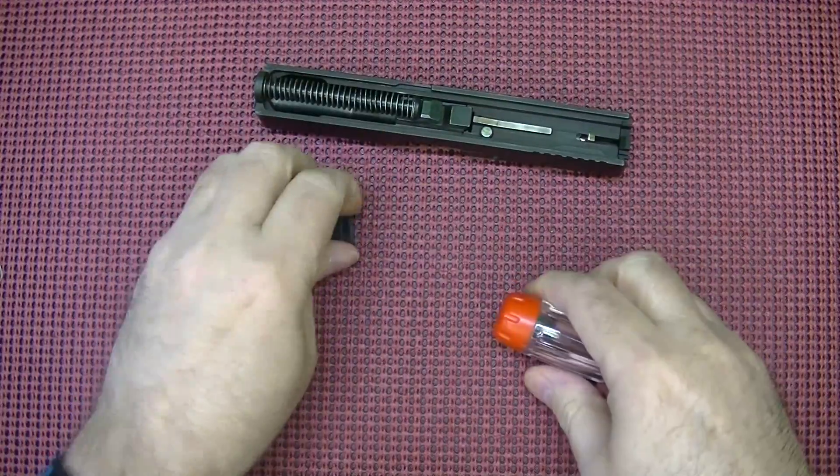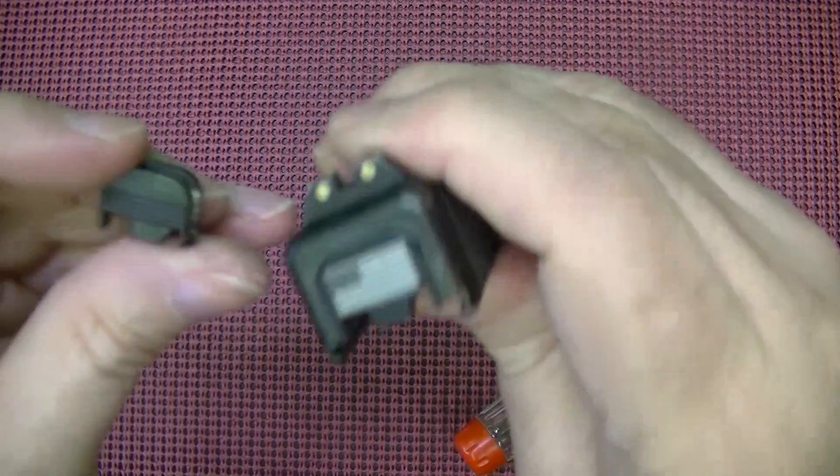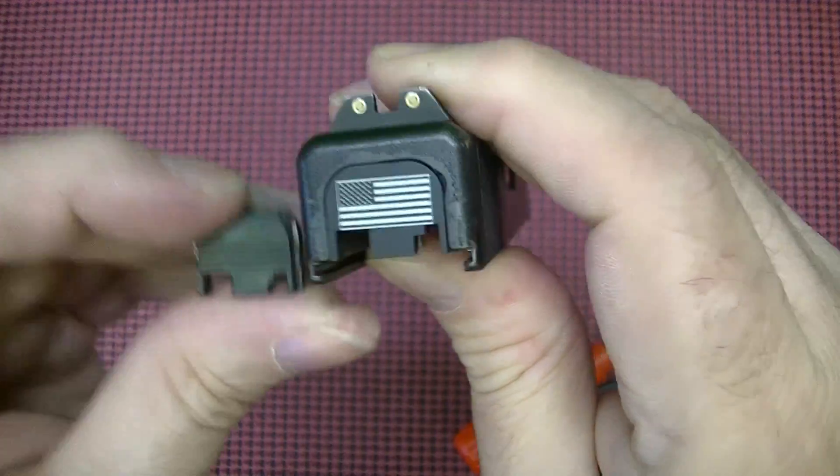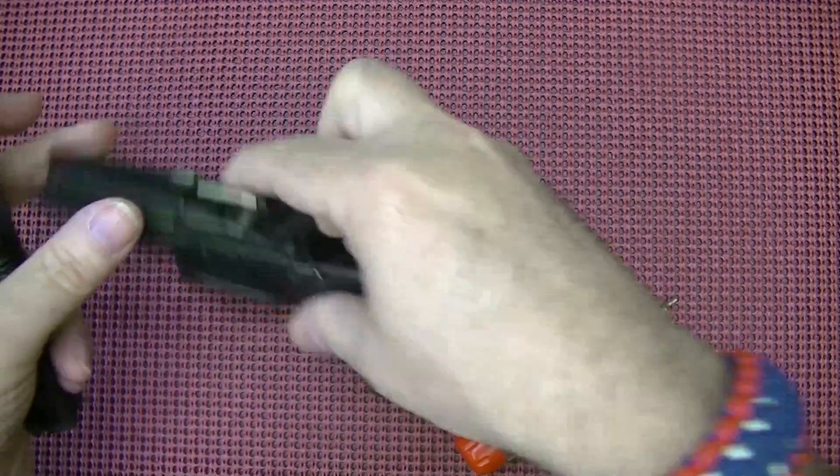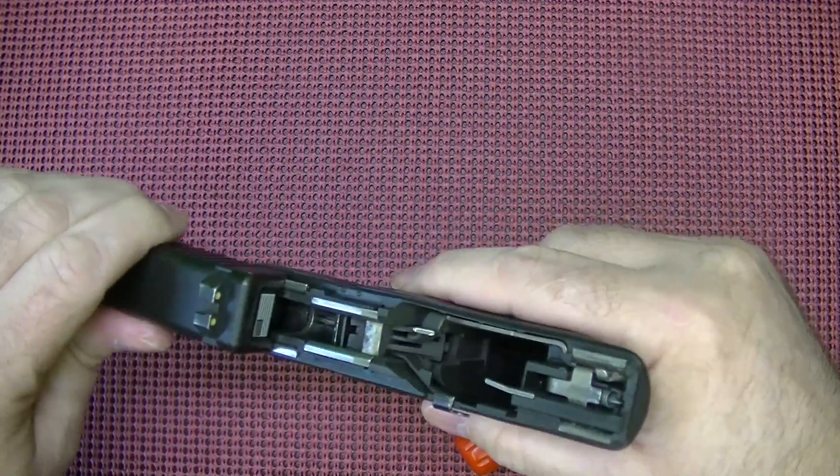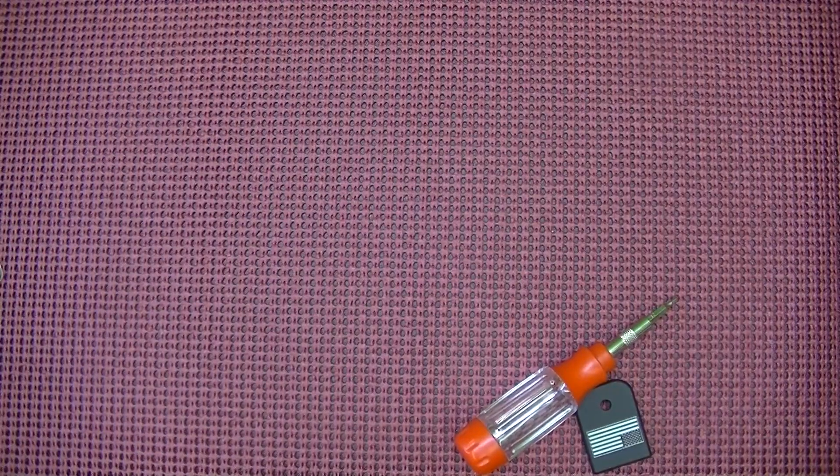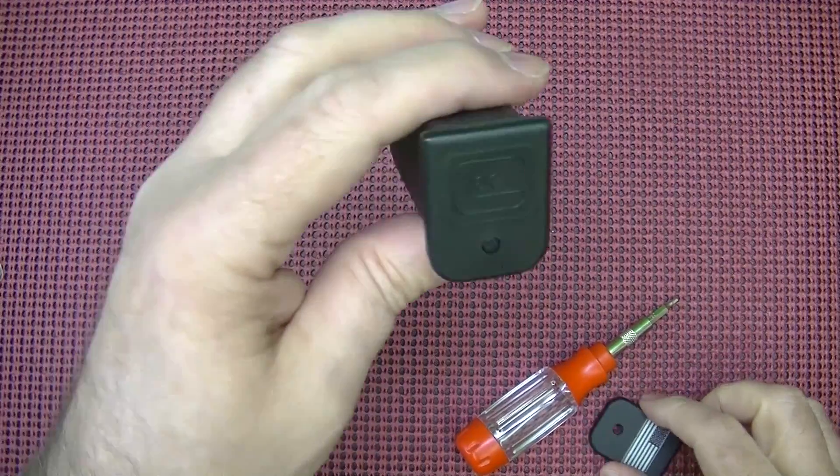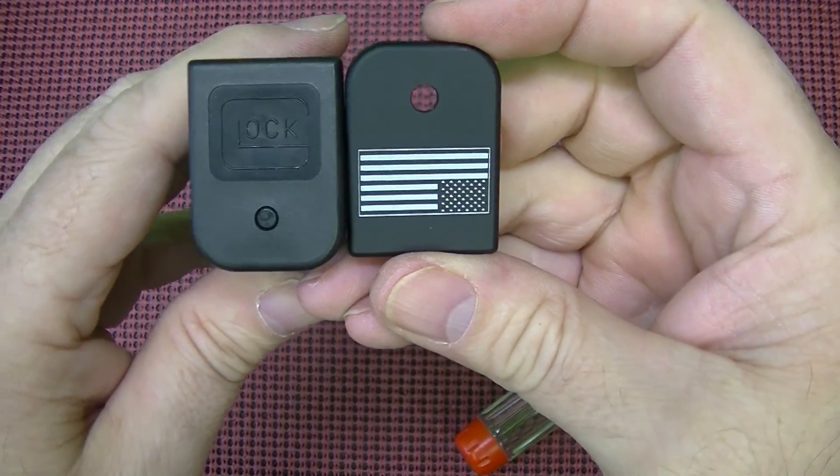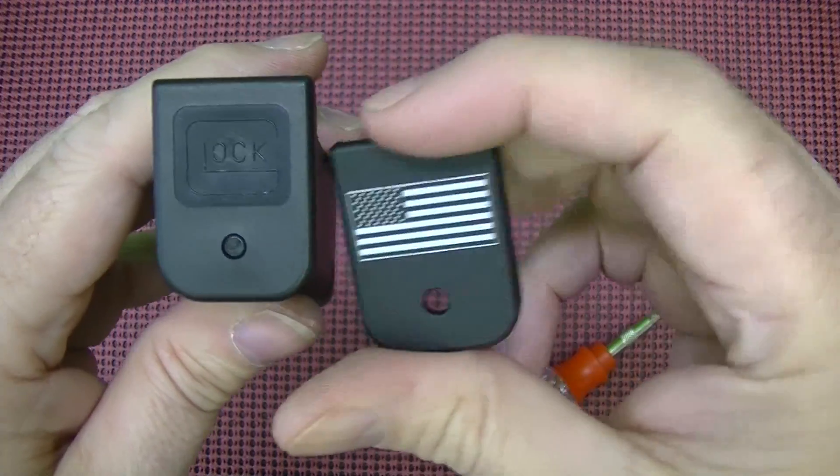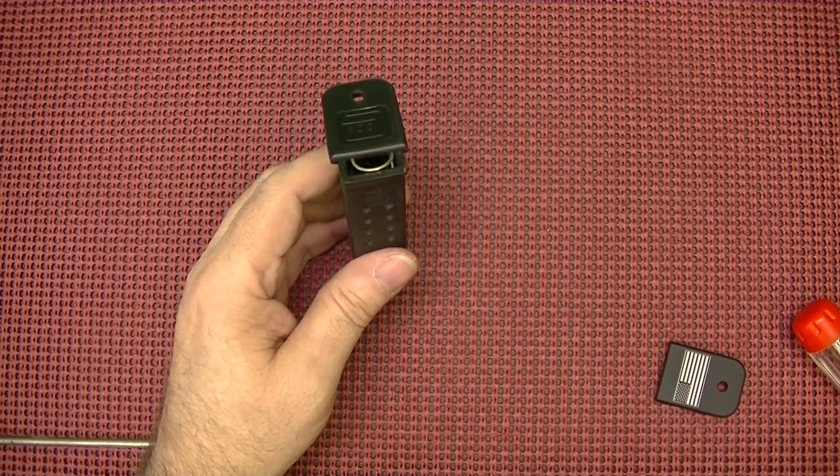Okay. So this is the one that came off. And now we have the new American flag one on. And then, of course, you just put everything back together. Kind of the same scenario with your magazine. This is going to take the place of that one. Okay. It'll be like this. So it's right side up.